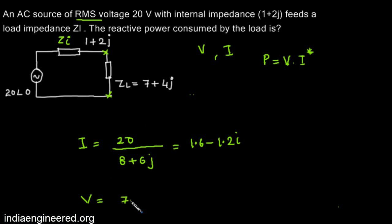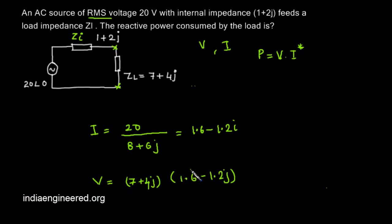Now what is the voltage? Voltage will be this current into the impedance, that will be 7+4j into 1.6-1.2j.